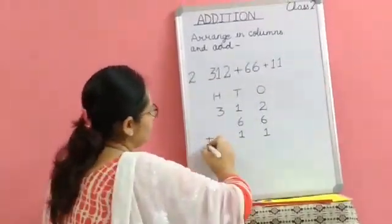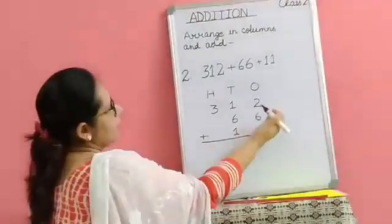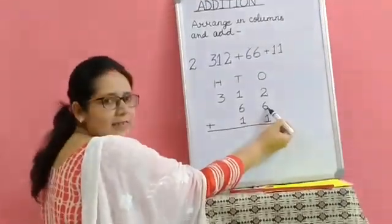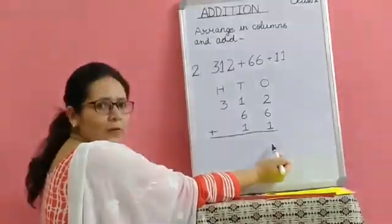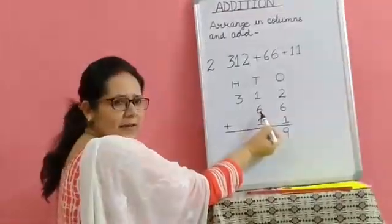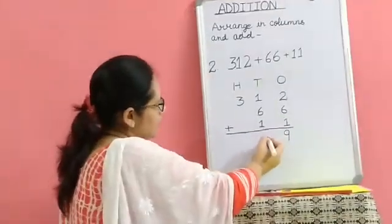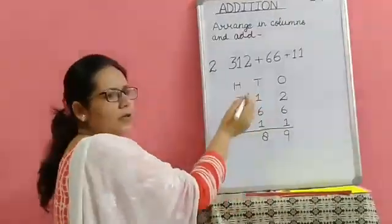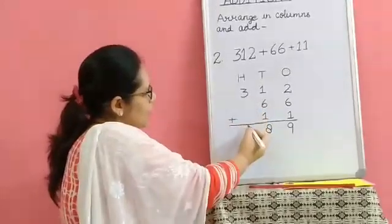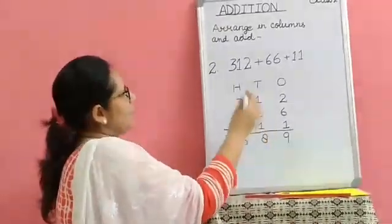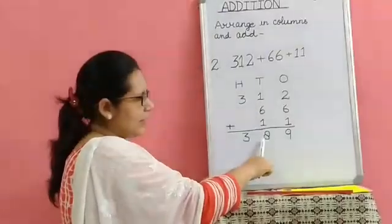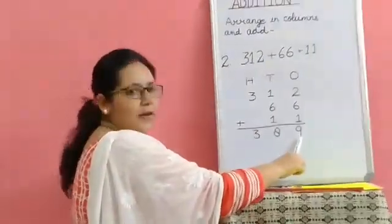We will add. Adding the numbers in the ones column: two plus six plus one. Two plus six is eight, and eight plus one is nine. So how many ones? Nine ones. In the tens column: one plus six is seven, and seven plus one is eight. How many hundreds? Three hundreds. There is no number in the other rows in the hundreds column, so we copy three. On adding three hundred and twelve, sixty-six, and eleven, we got three hundred and eighty-nine: three hundreds, eight tens, and nine ones.